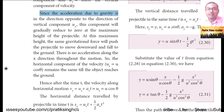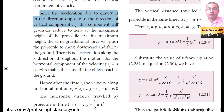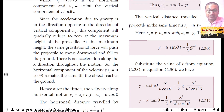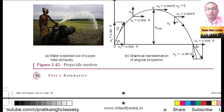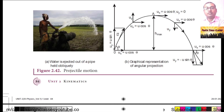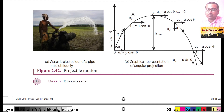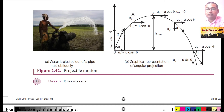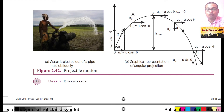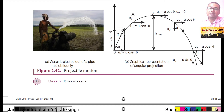Since the acceleration due to gravity is opposite to the direction of the vertical component uy, this component will gradually reduce to zero at the maximum height of the projectile. In figure 2.42b, the projectile is thrown at angle theta. There are two things happening: gravity pulls the object downward, and uy = u sinθ moves it upward. Taking downward as positive y-axis and upward as negative, u sinθ will be negative.